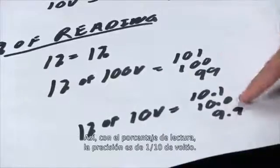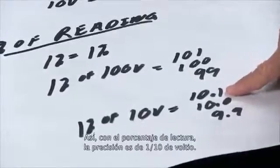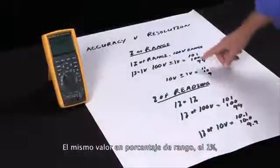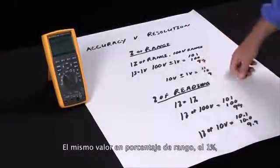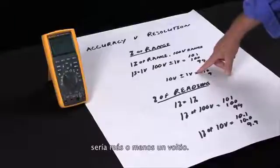So here with the percent of reading the accuracy is a tenth of a volt. The same thing specified with percent of range, one percent is now plus or minus one volt.